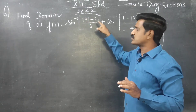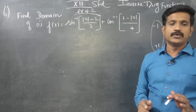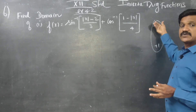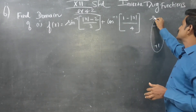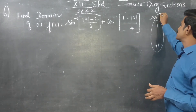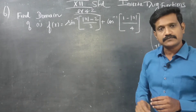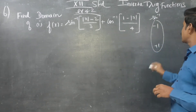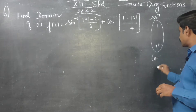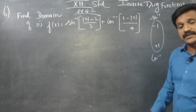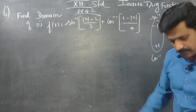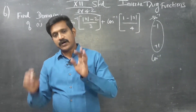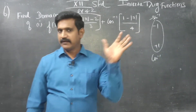In the bracket, the value mod x minus 2 by 3 is the input value. Here, minus 1 and plus 1 are the domain bounds for sine inverse. Similarly, cos inverse also has the domain minus 1 to plus 1. The sine inverse domain and cos inverse domain are identical.